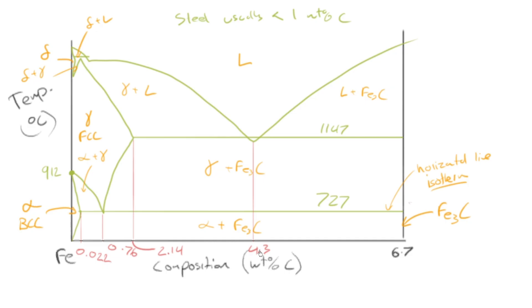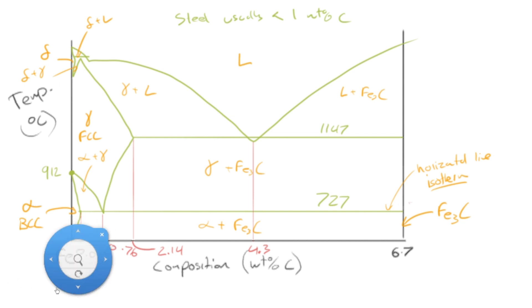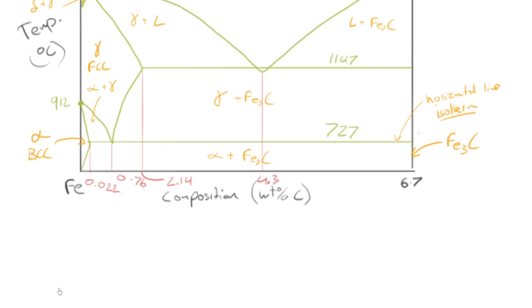So that's the iron-carbon phase diagram in all its glory. And we could do a quick little example calculation of a lever rule calculation on this system. So say, for example, that I gave you, or we had, a steel alloy, as an example. Say,